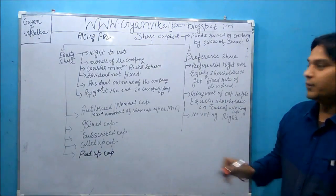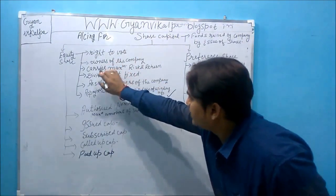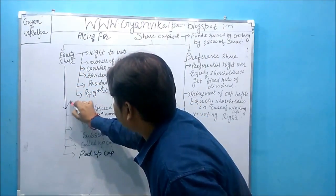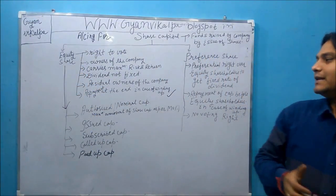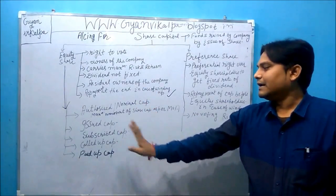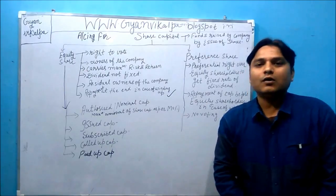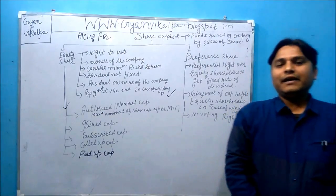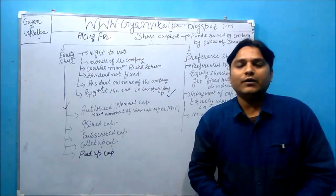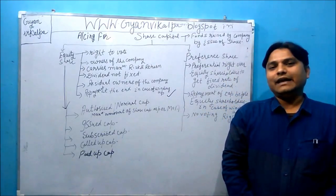Moving on to the part of equity share capital — equity share capital is of five types. Number one: authorized capital. Number two: issued capital. Number three: subscribed capital. Number four: called up capital. And number five: paid up capital.